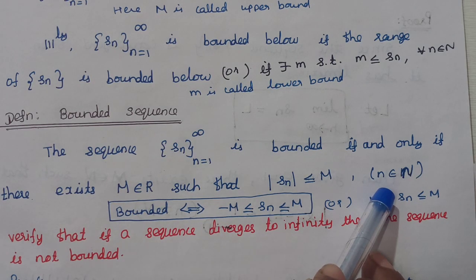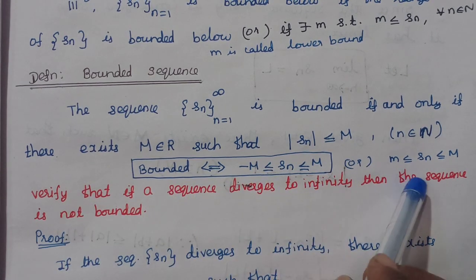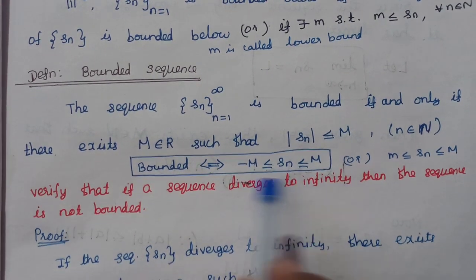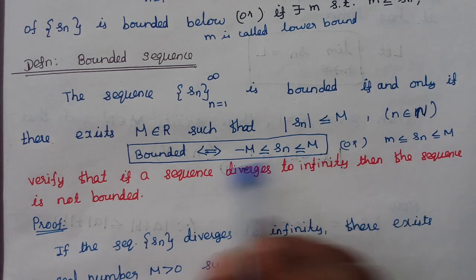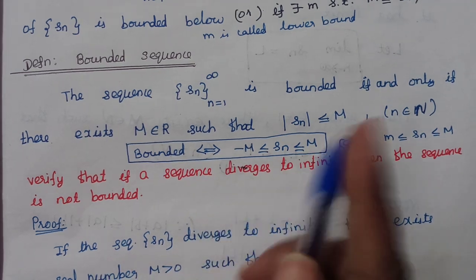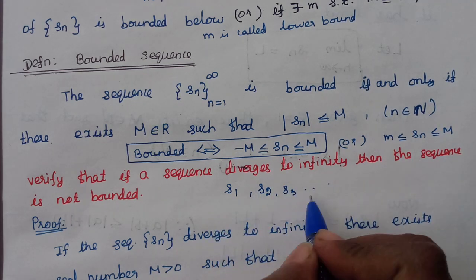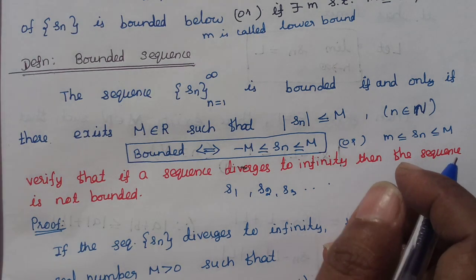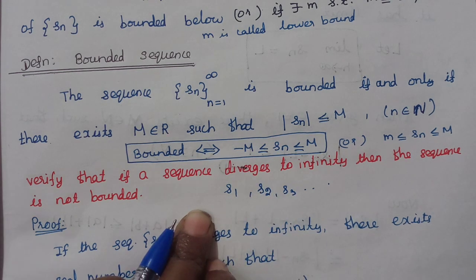If the sequence is bounded, every element lies within bounds. Now, verify that if a sequence diverges to infinity, then the sequence is not bounded. As n tends to infinity, Sn tends to infinity. It is bounded below — the first element S1 acts as a lower bound — but not bounded above.